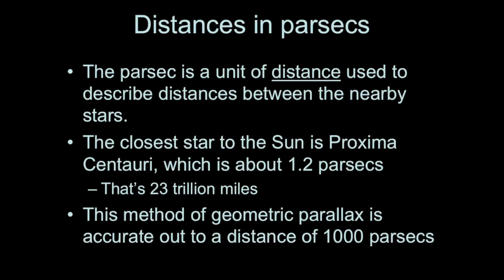All a parsec is, is the distance used to describe how far away these stars are. The closest star to us is called Proxima Centauri, and it's about 1.2 parsecs away. In miles, that's 23 trillion miles.